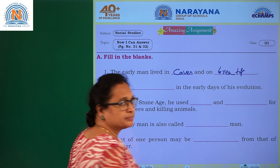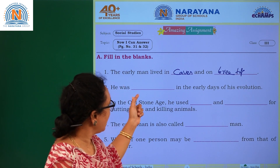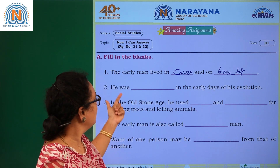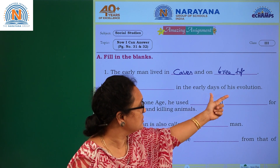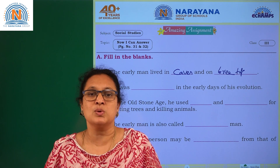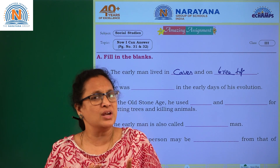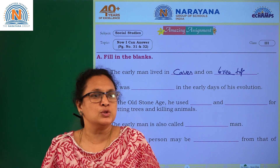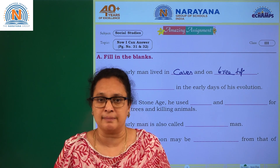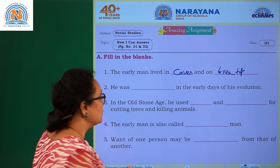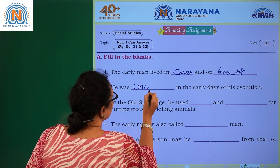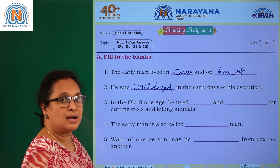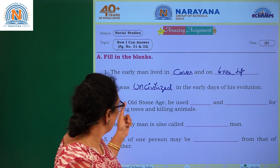Coming to the next one: he was dash in the early days of his evolution. Here 'he' refers to early man. Early man was completely uncivilized. We are civilized people — we know how to talk, how to behave, how to dress ourselves. This was not happening in the early stages, so early man was completely uncivilized.